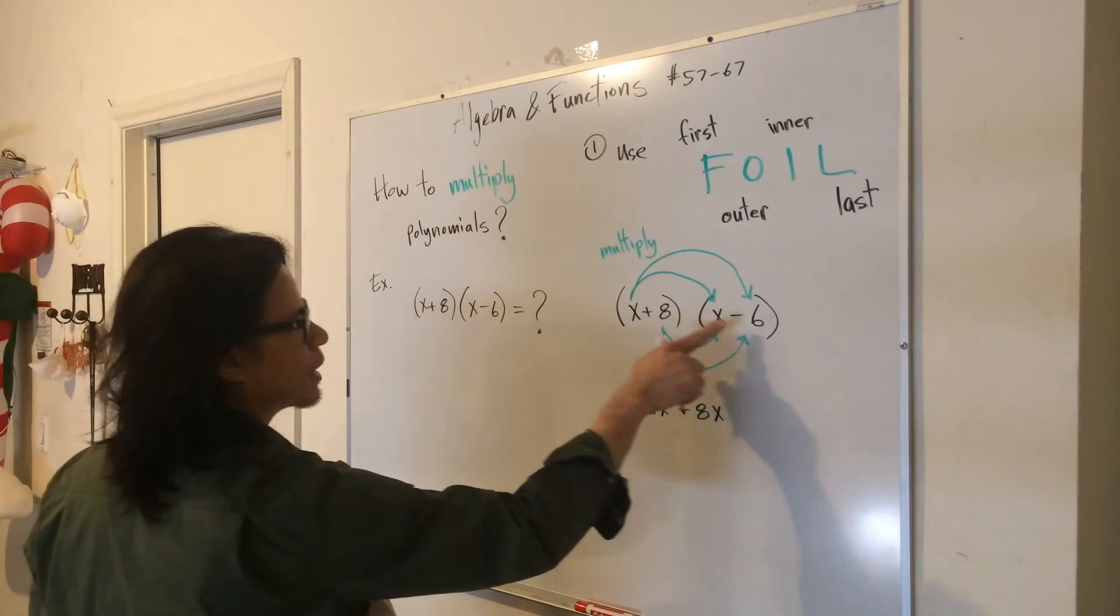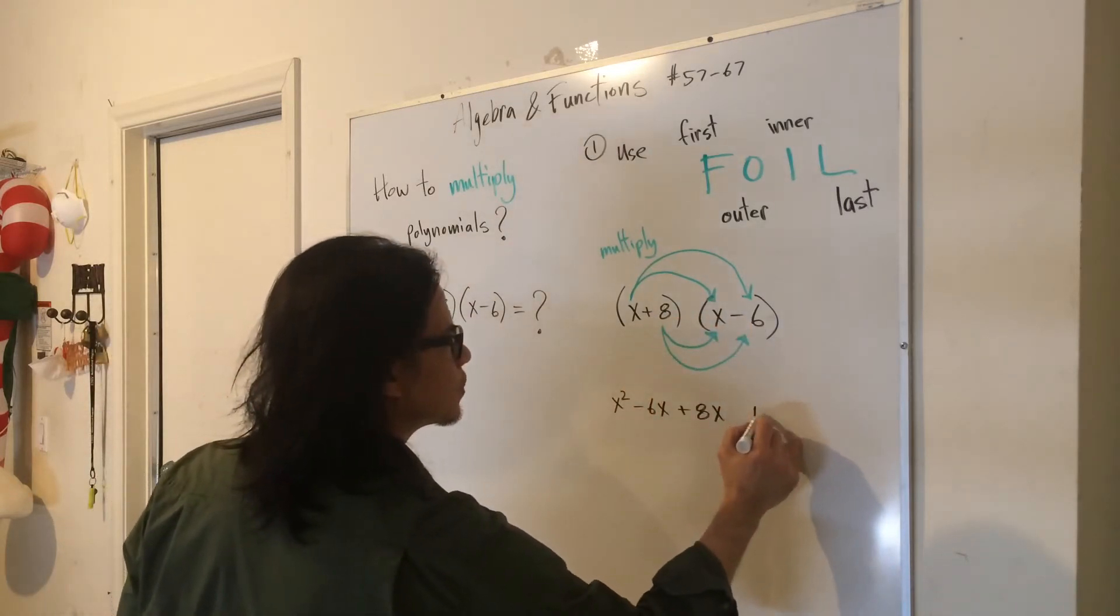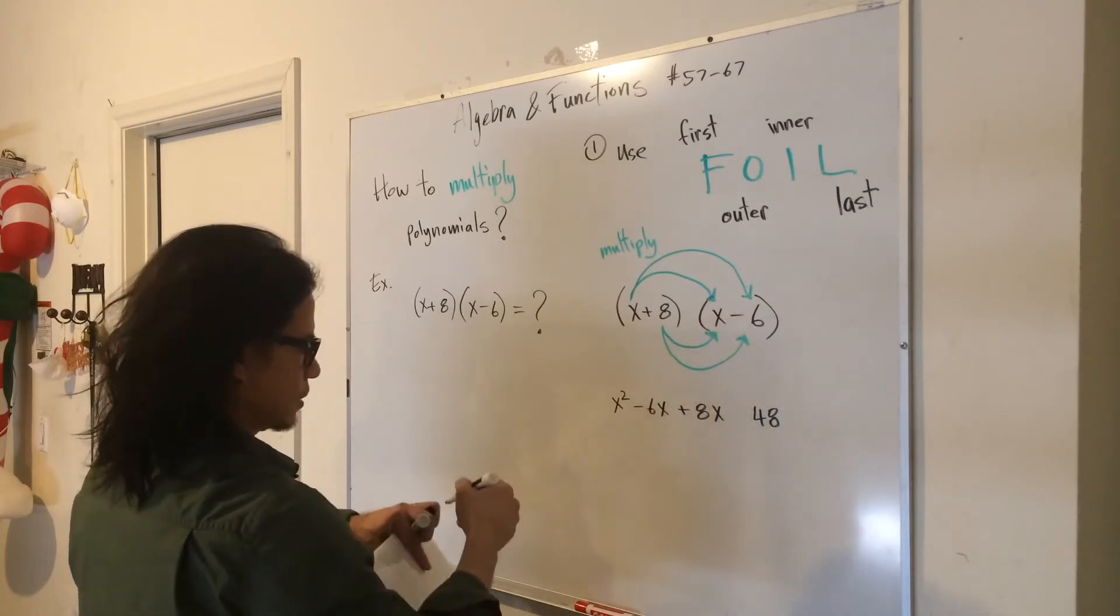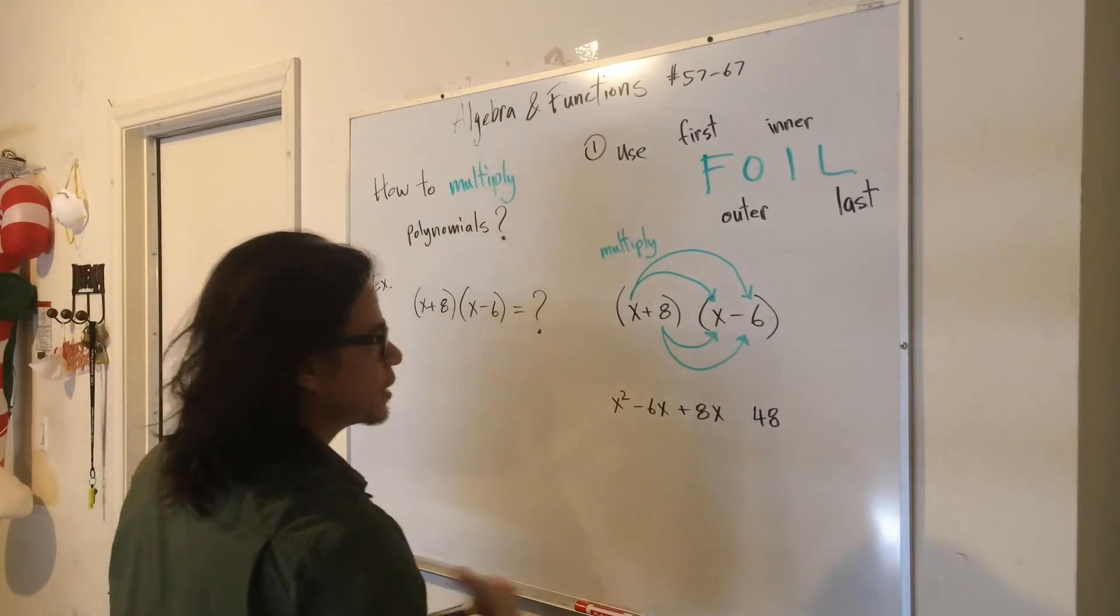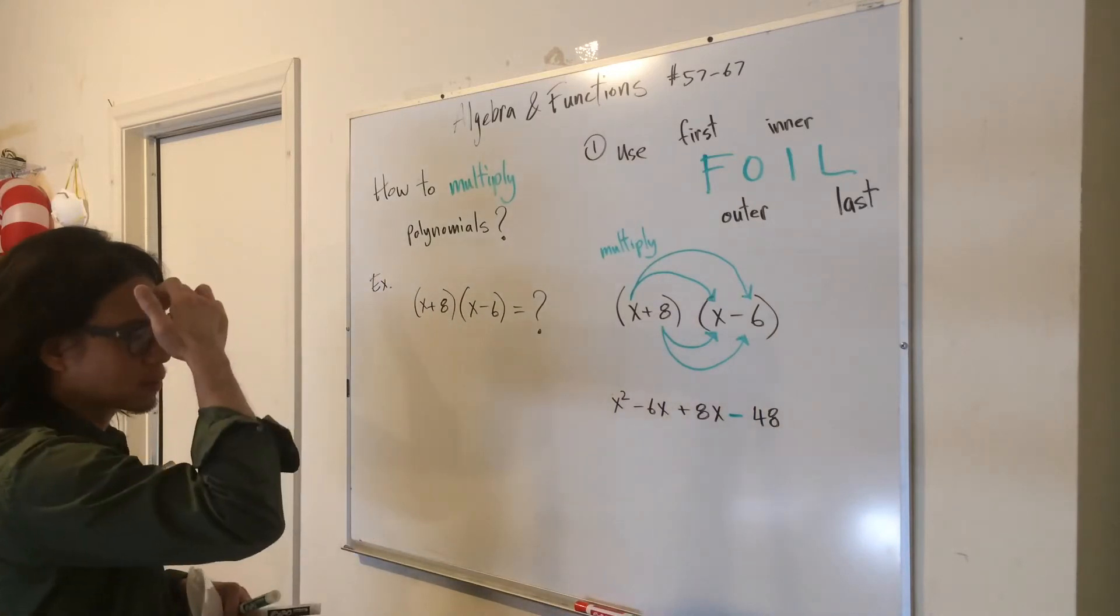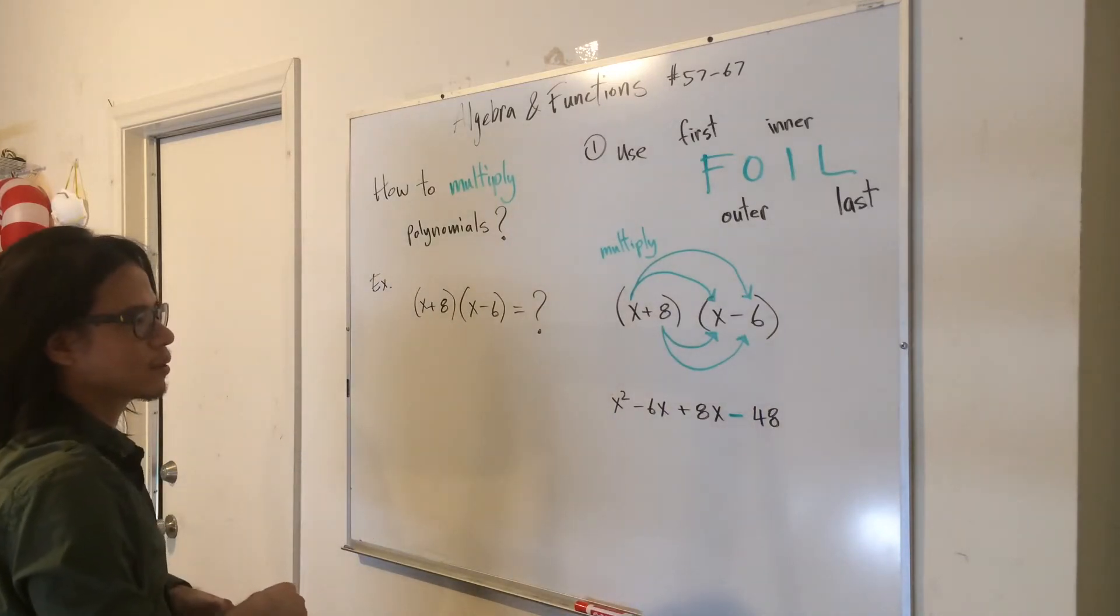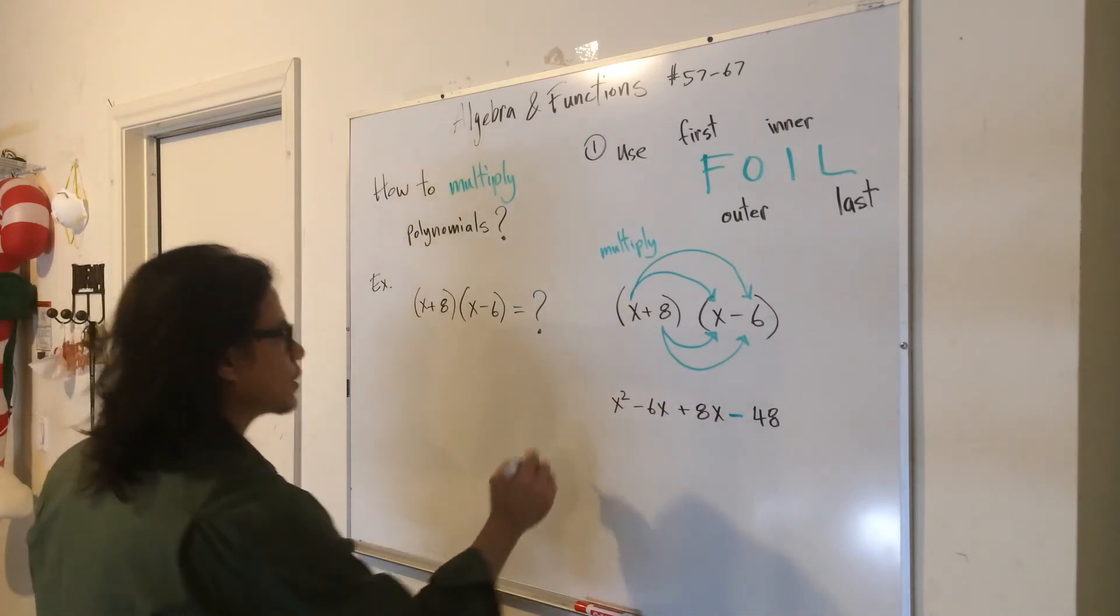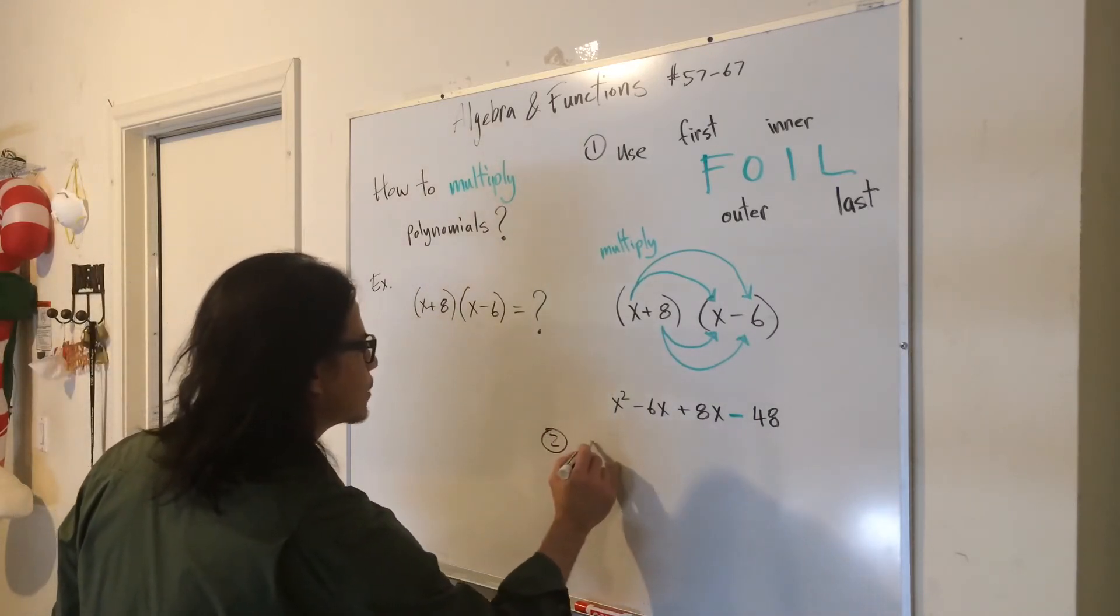8 times 6 is 48, negative. So watch your signs there. Remember the second step is to combine the like terms.